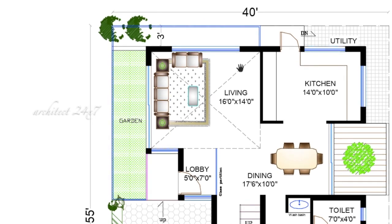The living room size is 16 by 14 feet. And according to Vastu, this living room should be placed towards the northeast direction. And here in this living room, we have given a double height. The reason for the double height is — the higher the ceiling, the lower will be the room temperature. So that is the reason we have given a double height here, and there is a garden space in this living room.